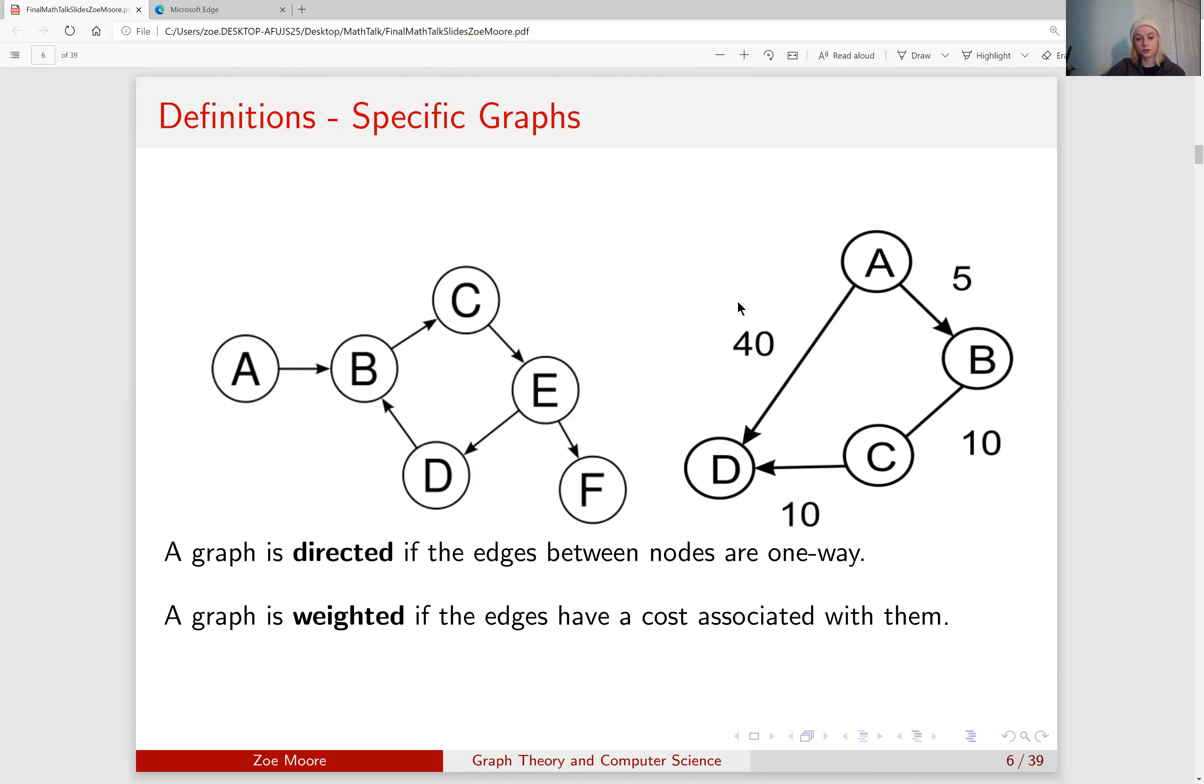Now moving into more specific graphs. A graph is considered directed if the edges between nodes are one way. So in this graph on the left, we can only go from A to B, not from B to A, meaning that this graph is directed. A graph is weighted if the edges have a cost associated with them. So in this graph on the right, going from A to D has a cost of 40. This can be either distance or a weight or some sort of constraint placed on moving between the nodes. And it's important to note that a weighted graph does not have to be directed.